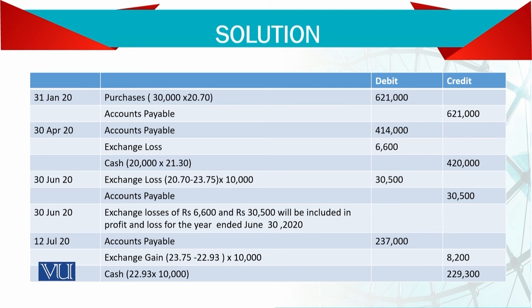At year end, check the remaining accounts payable balance. You had 30,000 yen; 20 were paid, leaving 10 remaining. For these 10,000 yen, check the original rate versus the new closing rate, which becomes 27.235. The difference in rates is another form of exchange loss — you will have to pay more. Accounts payable increases, and the exchange losses of 6,000 and 3,000 go to the income statement at year end — both losses flow through the income statement.